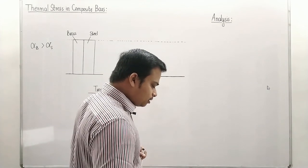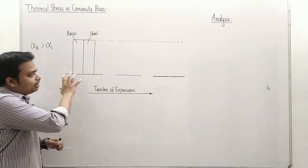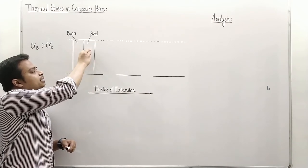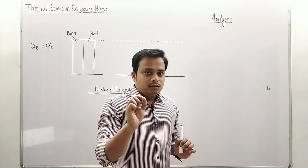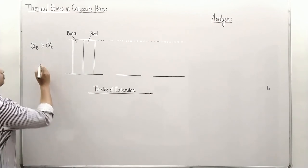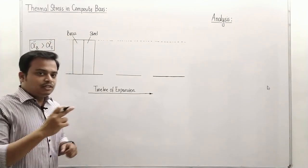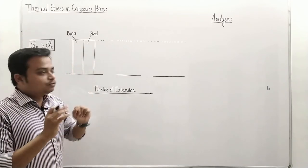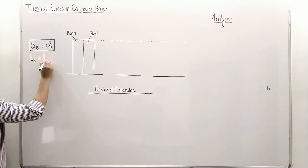With the help of an illustration, I'm going to explain how the stresses are going to be induced and what the total elongation will be. This composite system has some portion made up of brass and the remaining portion is steel, and they are rigidly fixed. You need to remember that the coefficient of linear expansion for brass is going to be more than that of steel. So the free expansion in case of brass will be more than that of steel. Also, the initial length of the brass material is equal to the length of the steel.